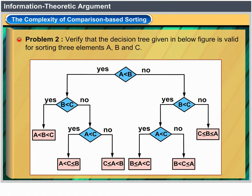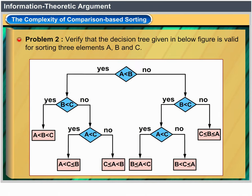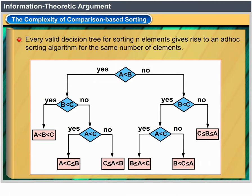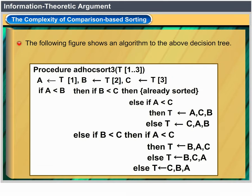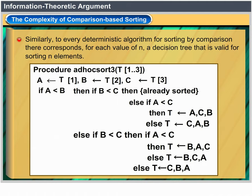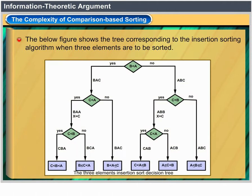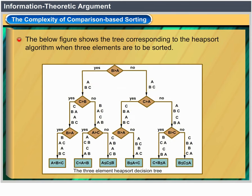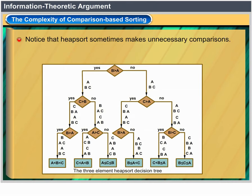Every valid decision tree for sorting n elements gives rise to an ad hoc sorting algorithm. The below figures show the trees corresponding to insertion sort and heap sort when three elements are to be sorted. Heap sort sometimes makes unnecessary comparisons — for instance, if B ≤ A ≤ C, the decision tree of heap sort first tests whether B > A (no), then C > A (yes), but nonetheless asks again whether B > A before reaching its conclusion. Thus, heap sort is not optimal.